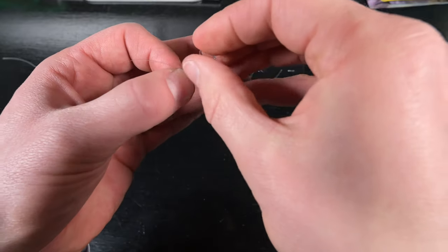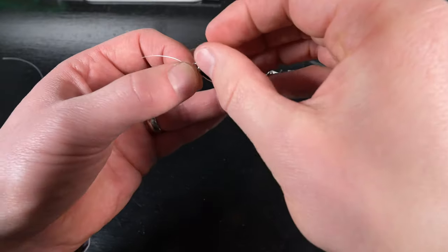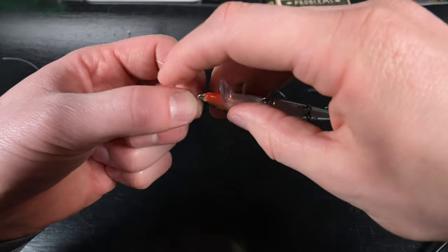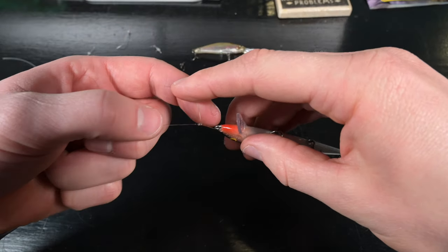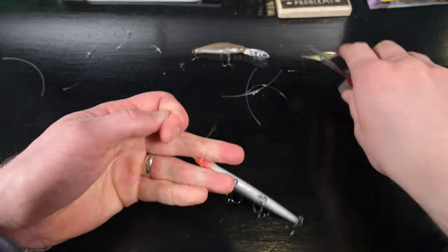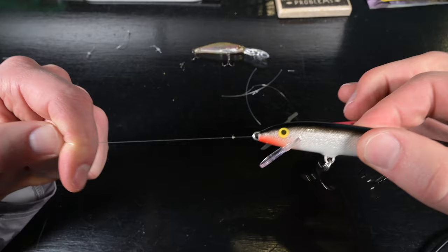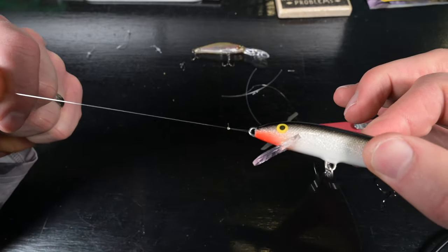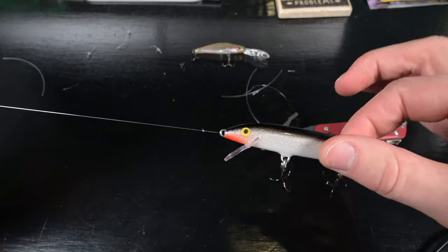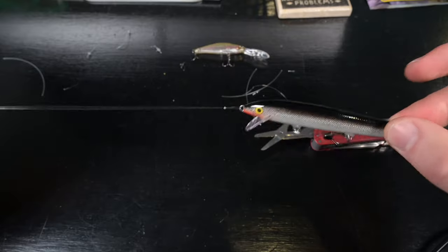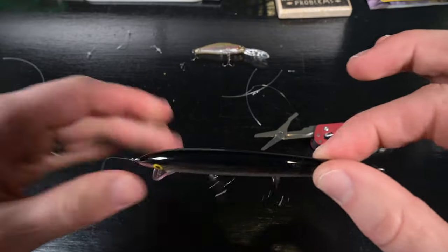We tighten up our loops and there you have it. That is a very small, discreet knot. I've never really had these knots fail. They work fantastic. I've caught all my fish in the past 10 years with this knot.